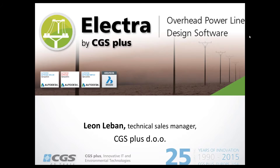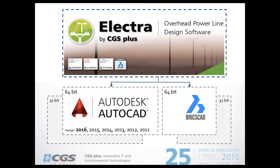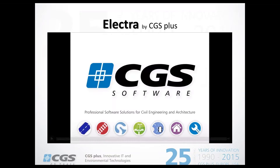Hello and welcome to today's webcast for Electra, an overhead power line design software produced by CGS Plus. My name is Leon Leban and I'll guide you through an overview of the Electra features. Electra runs on top of Autodesk AutoCAD and AutoCAD Civil 3D, but also AutoCAD Map platforms from 2016 down to 2011, and also on BricsCAD platforms from version 15 down to version 13. Combining Electra with BricsCAD makes it even more cost-effective for customers needing software for overhead power line design.